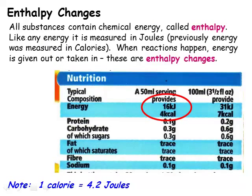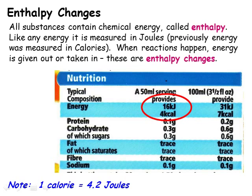The proper name for the chemical energy that substances have is enthalpy. This form of energy originates with the chemical bonds that hold the substance together. Like any form of energy, enthalpy has units of joules, although a joule is a pretty small amount of energy, and it's more usual to discuss energies in kilojoules.